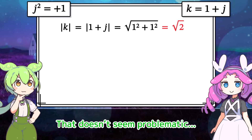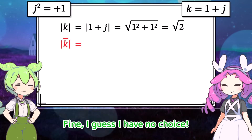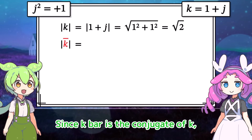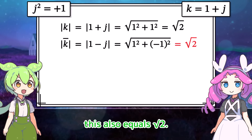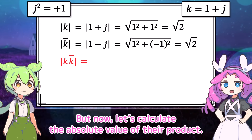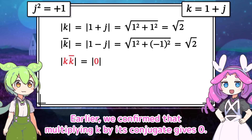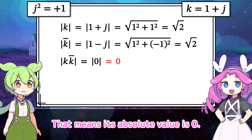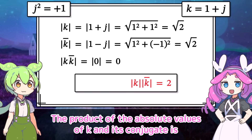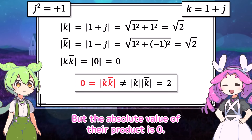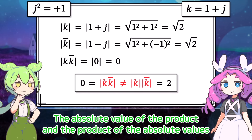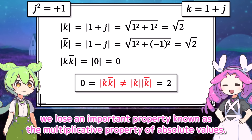Now try calculating the absolute value of the conjugate of k. Since k-bar is the conjugate of k, it becomes 1 minus j. Calculating the absolute value the same way, this also equals the square root of 2. But earlier we confirmed that multiplying k by its conjugate gives 0, so its absolute value is 0. The product of the absolute values is the square root of 2 times the square root of 2, which equals 2, but the absolute value of their product is 0. So the absolute value of the product and the product of the absolute values give different results.